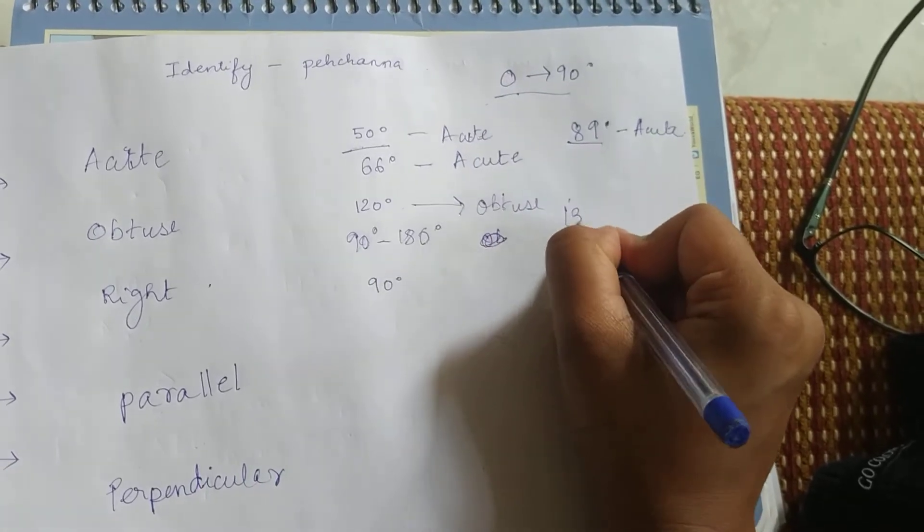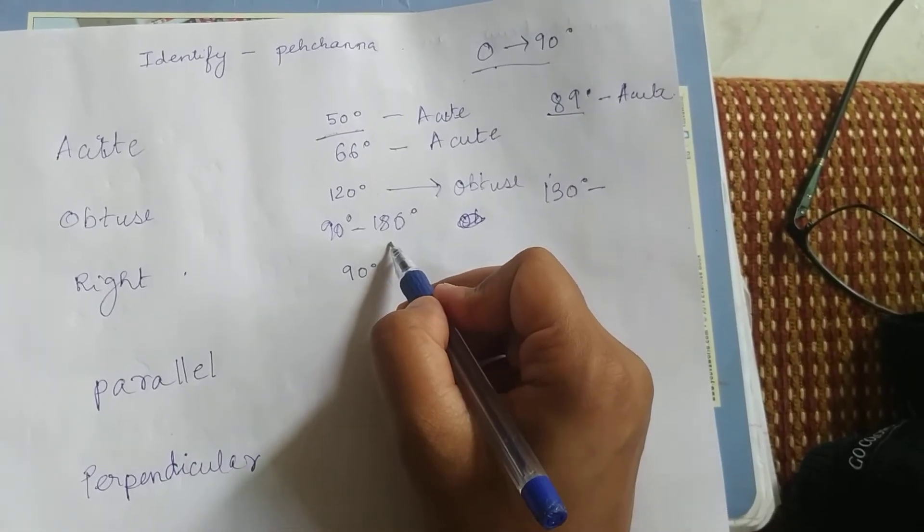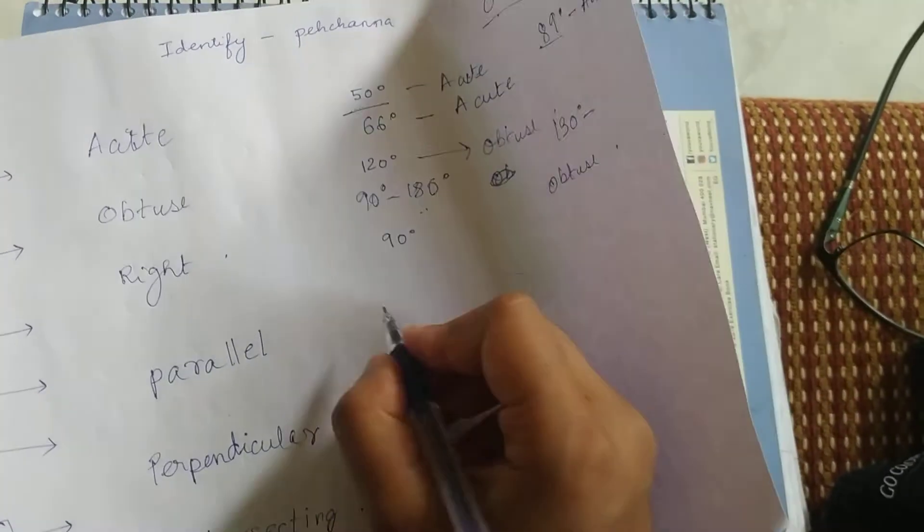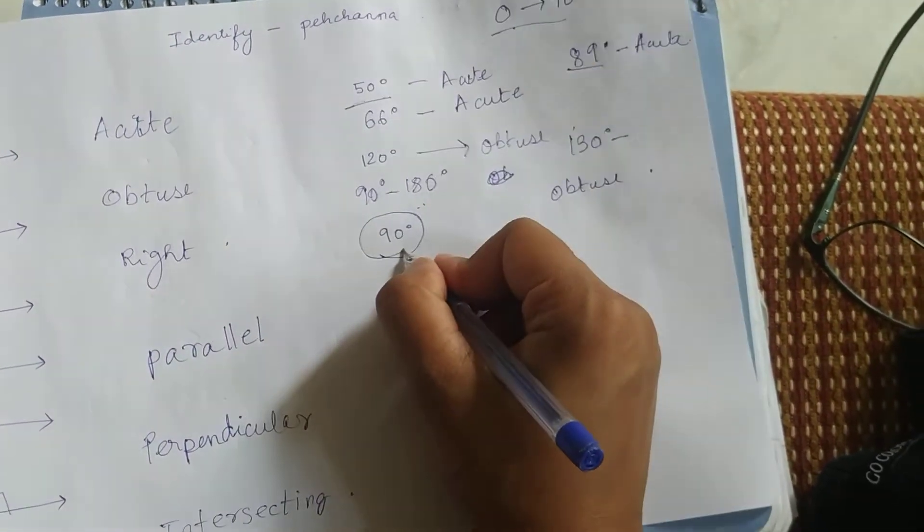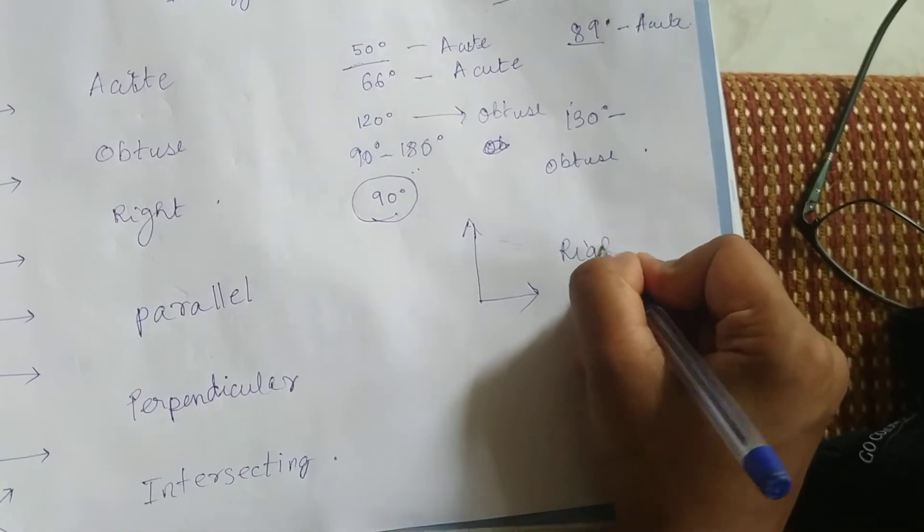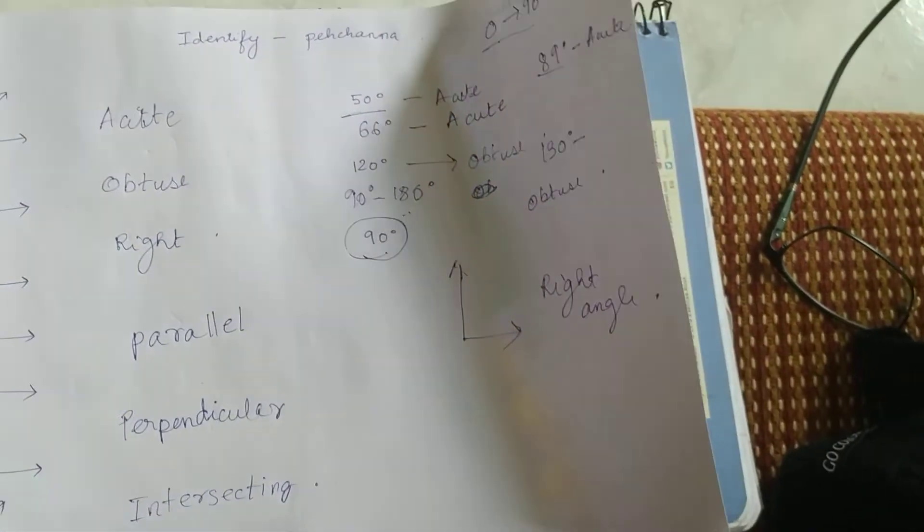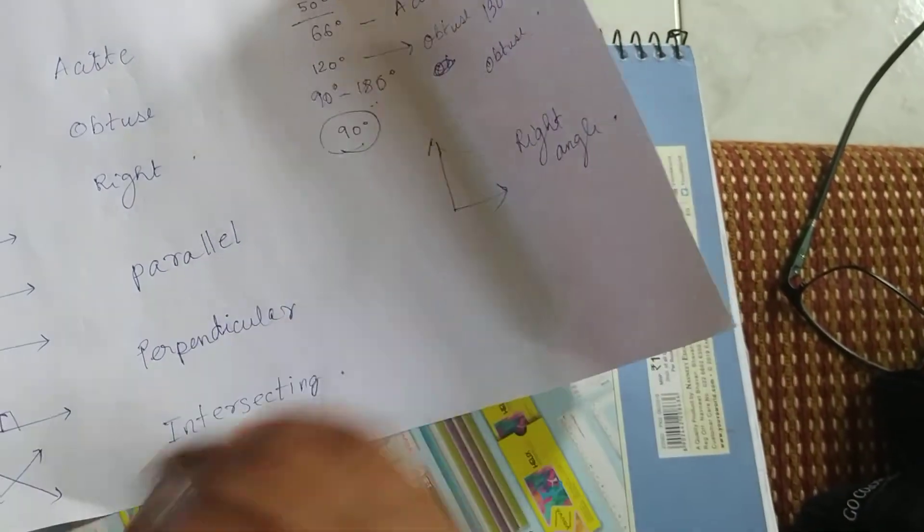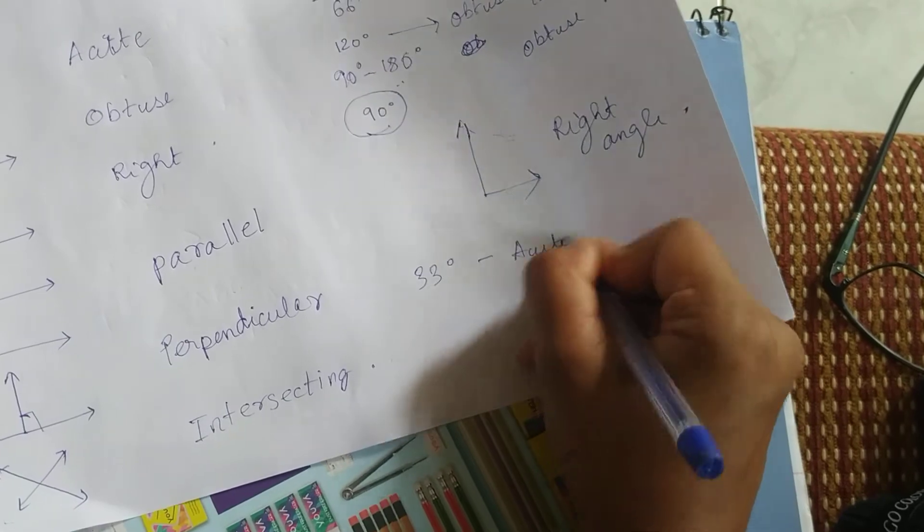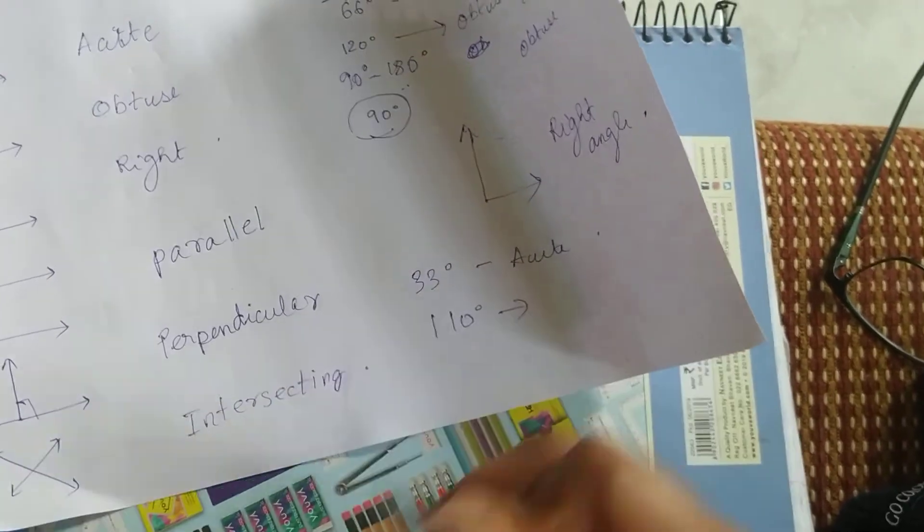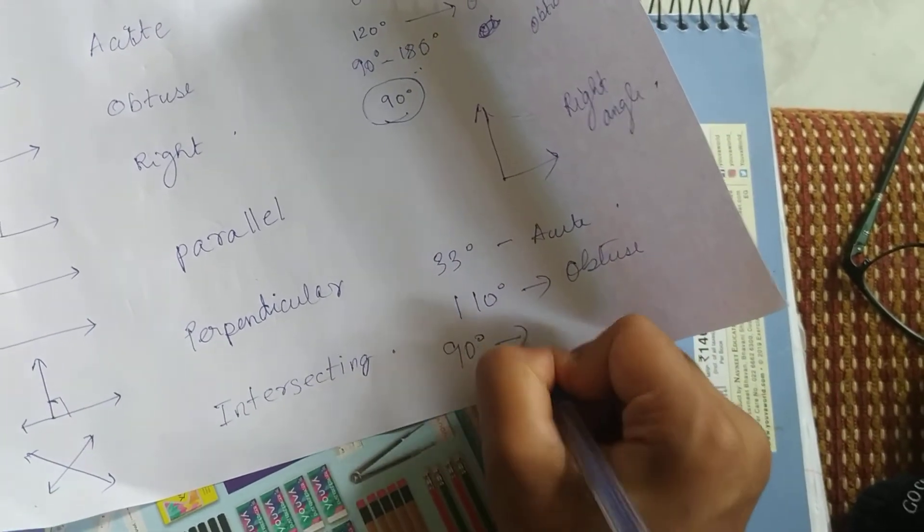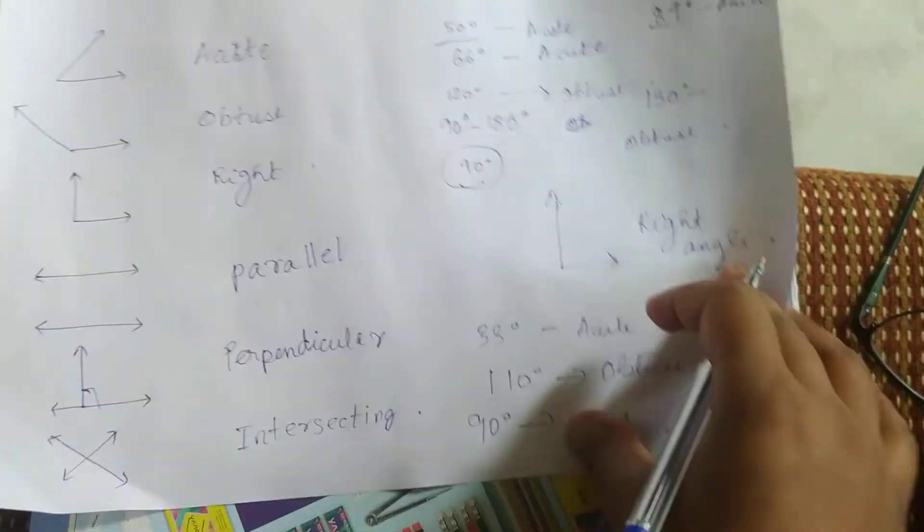If we give 66 degrees, it will be acute. If we give 89 degrees, it will also be acute because it is smaller than 90. Whenever there is an angle smaller than 90, it will always be acute angle. Now, if it is bigger than 90 but smaller than 180, then we will call it obtuse. So if we get 130 degrees, it is bigger than 90 and smaller than 180, this is obtuse. Similarly, if there is an angle exactly 90 degrees, then we call it right angle.